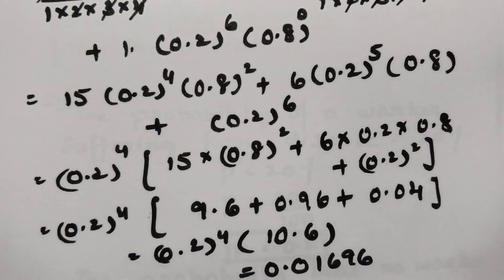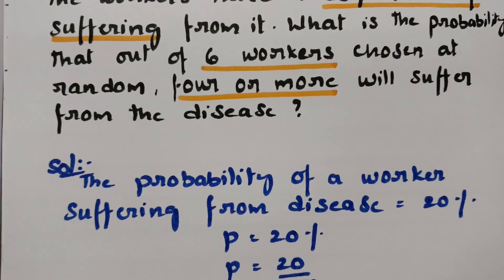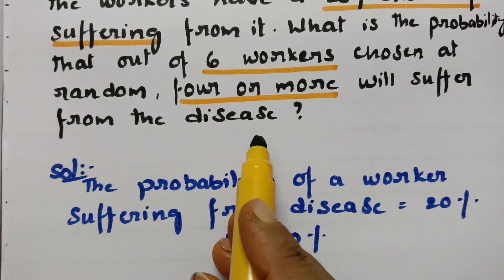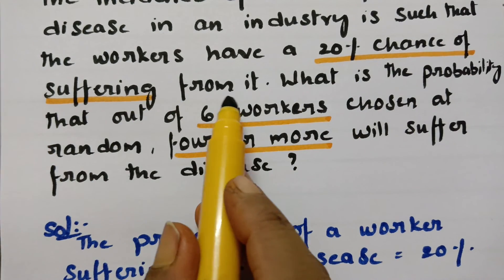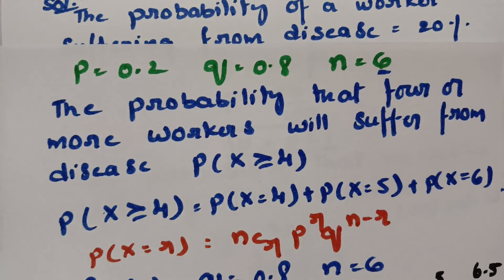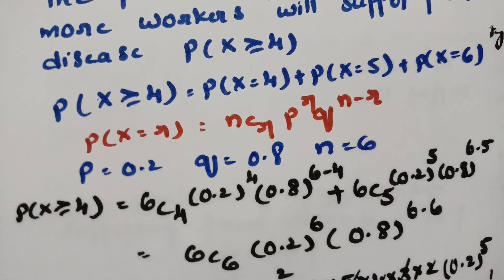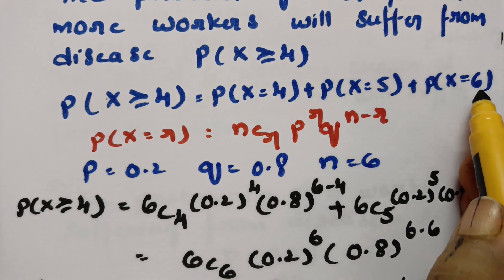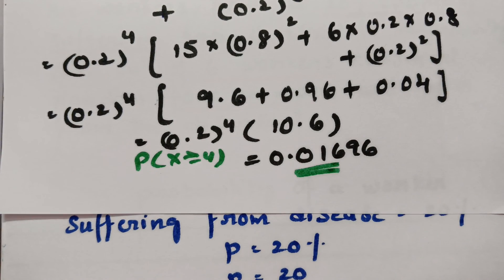Therefore, the probability that out of 6 workers chosen at random, 4 or more will suffer from the disease is 0.01696. To summarize: P = 0.2, Q = 0.8, n = 6, and P(X ≥ 4) covers x = 4, 5, 6. After substituting all values, the final answer is 0.01696. Thank you for watching.